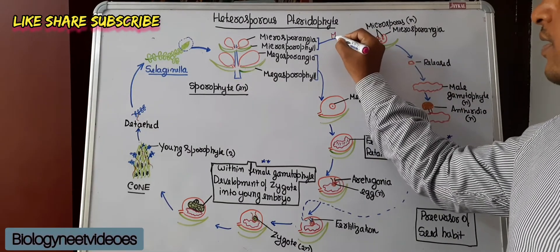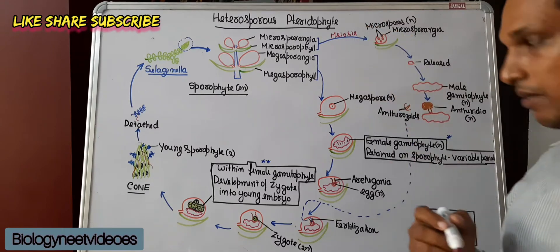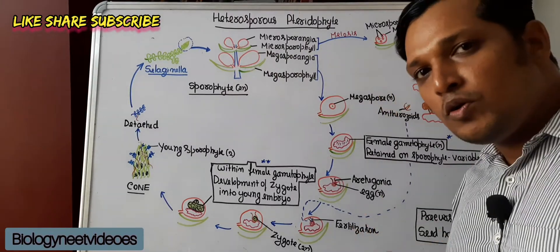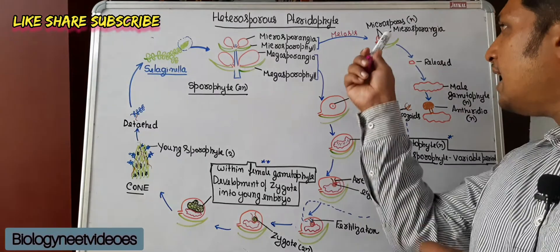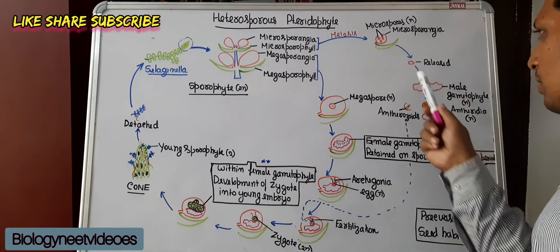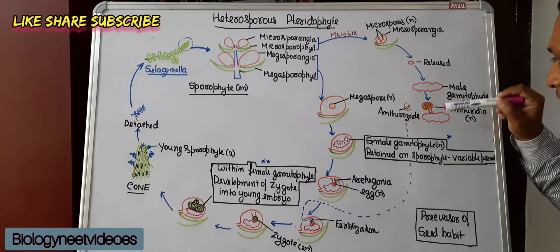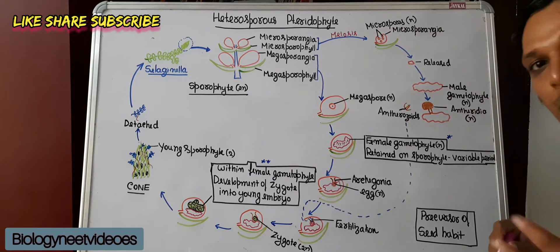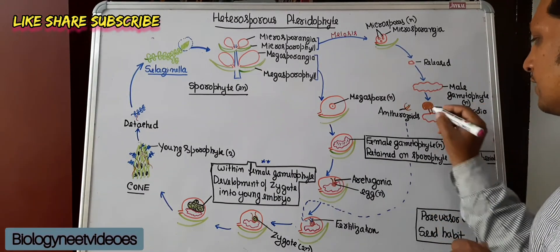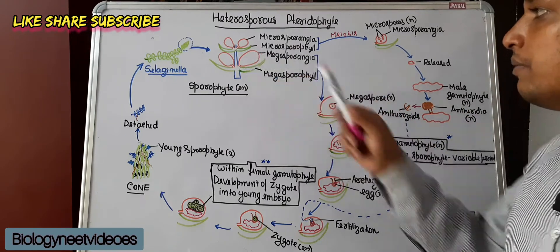This meiosis is a reductional division. Microsporangia produce microspores. Microspores will germinate a little bit inside the microsporangia and then are released out. Once released, the microspores develop into the male gametophyte. The male gametophyte forms its sex organ — the gametophyte forms a sex organ called antheridia. Antheridia, through mitosis, produce biflagellated antherozoids.